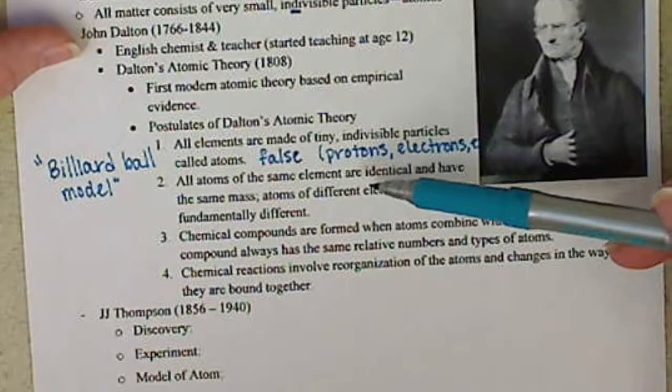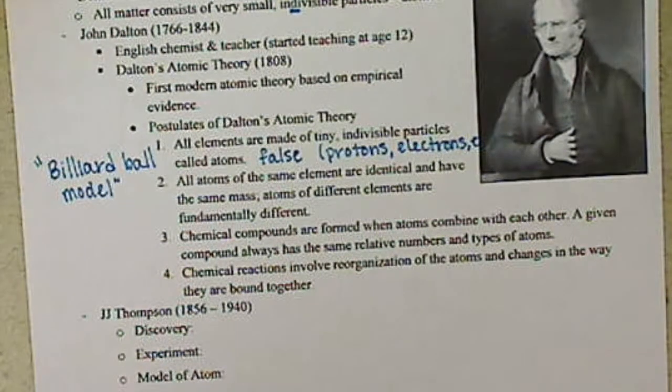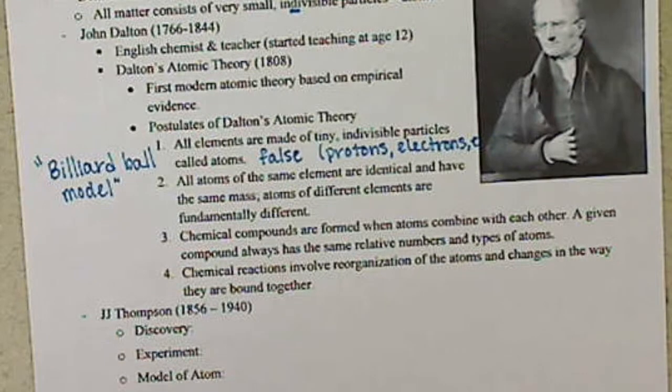So, you know, Dalton's first atomic theory ended up being false, but still we have three more postulates. There's a big step to have this empirical evidence, so we'll keep going here. The second postulate, all atoms of the same element are identical and have the same mass. Atoms of different elements are fundamentally different. So basically, one sphere is, if that sphere is hydrogen, if we find another sphere of hydrogen, those two spheres are identical.